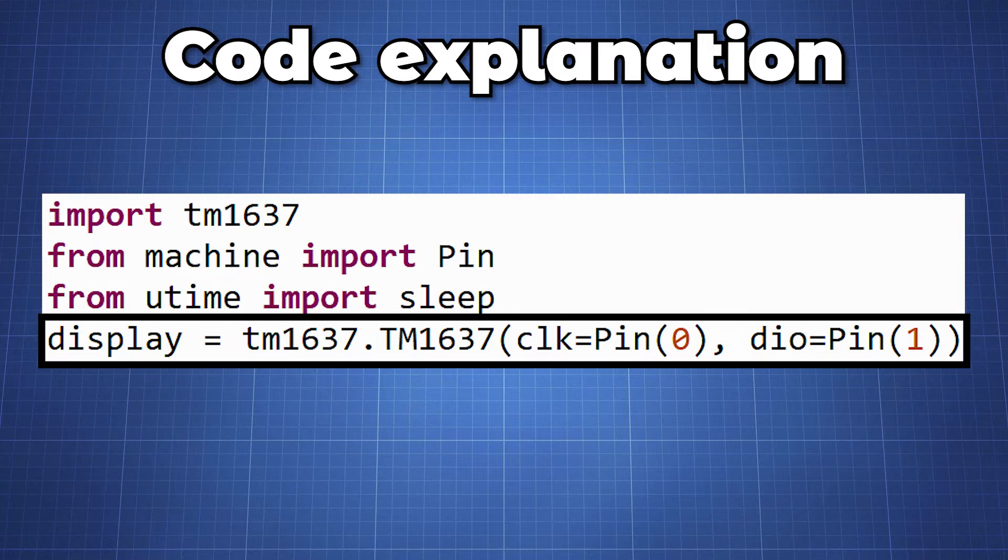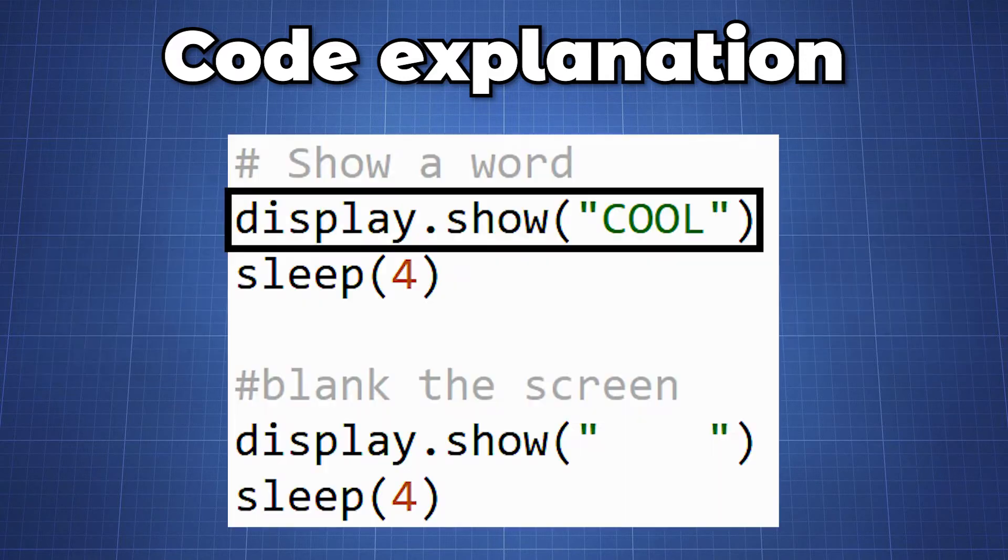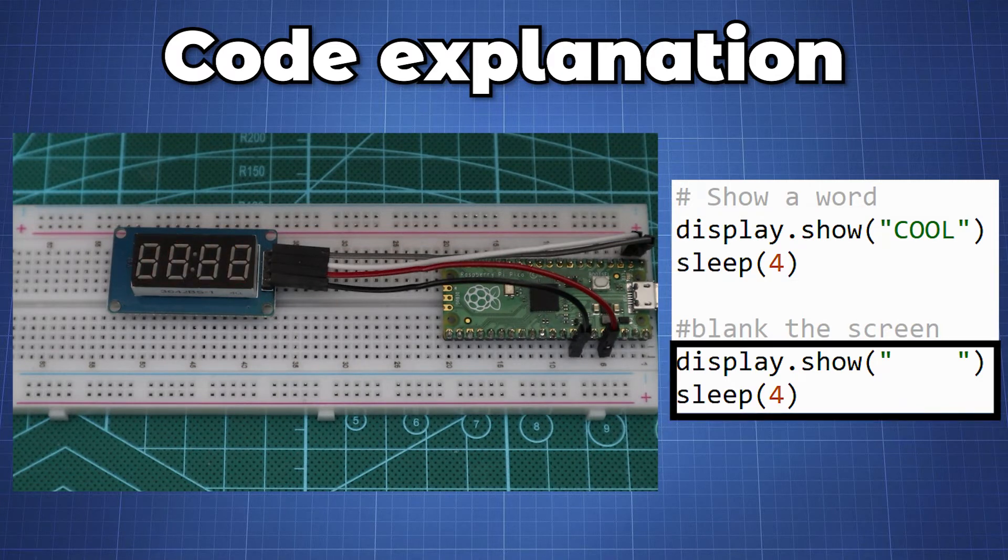We have different methods we can use with the library. The first method is show. This allows us to display four characters. In this block of code we display the word cool which will be displayed when we run this code. This will display for four seconds and then we will clear the screen with four empty spaces for four seconds before we go to the following method.